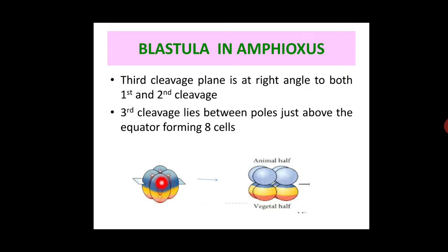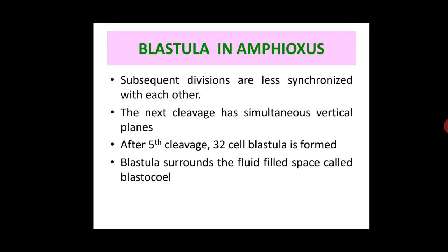Cleavage again occurs at the metaphase plate, as in the previous two cleavages. Subsequent divisions are less synchronized with each other. After five cleavages, a blastula is formed, which is a 32-cell structure.